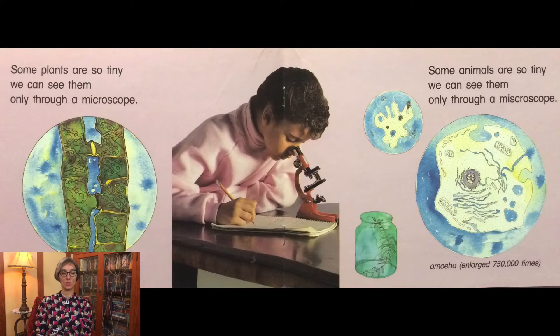Some plants are so tiny we can see them only through a microscope. Here you can see a picture of algae and this is what it would look like under a microscope. Some animals are so tiny we can see them only through a microscope and you can see the amoeba right under here enlarged many times.